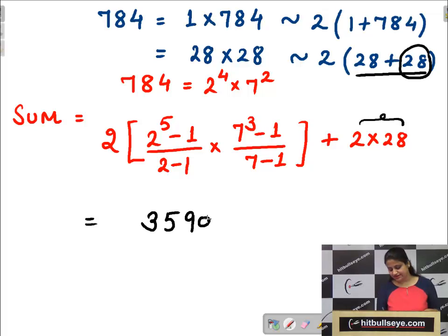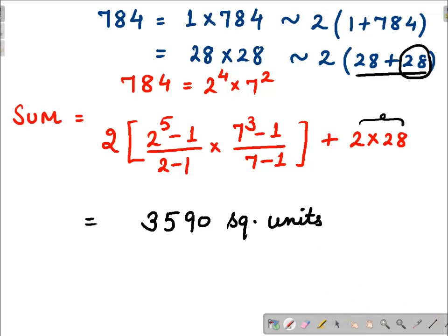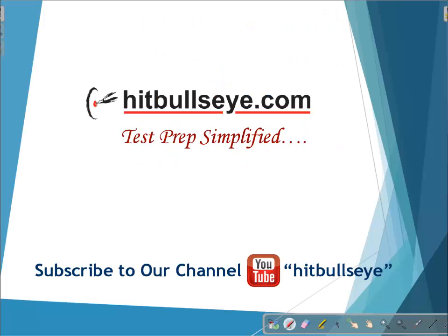Now if you solve this sum you will get the answer as 3590 square units. I hope the idea is clear now. To see the full length video, log on to hitbullseye.com. Thank you so much.